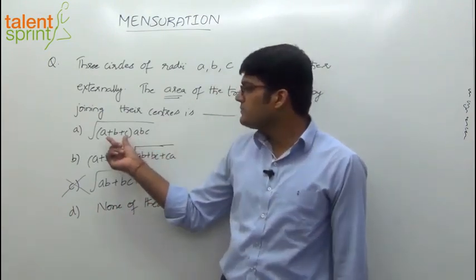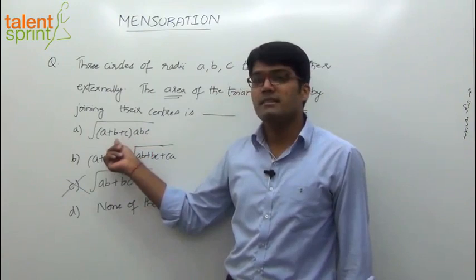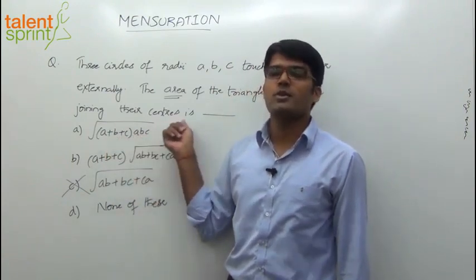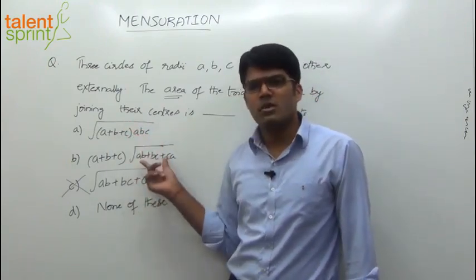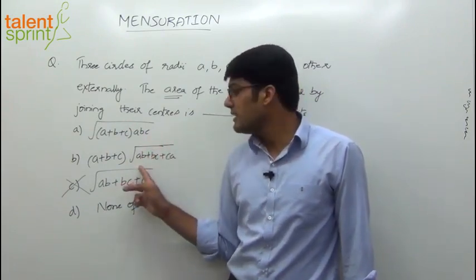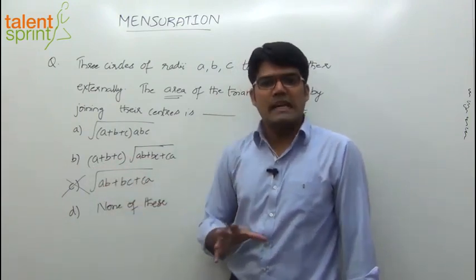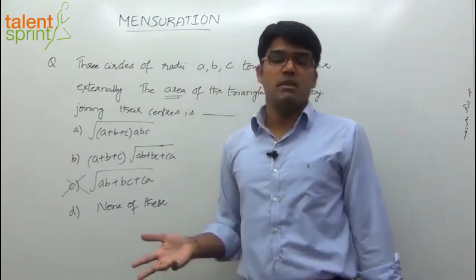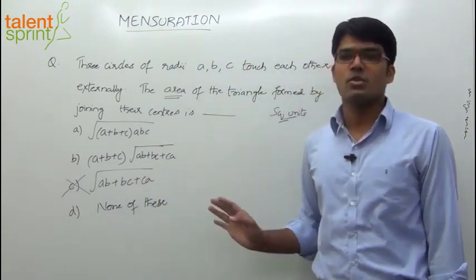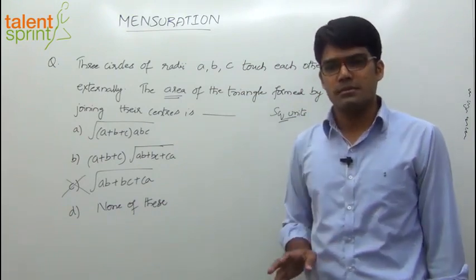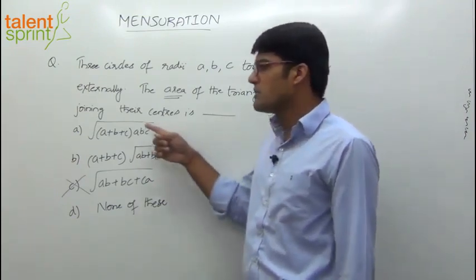Look at the remaining options. One option has length times length times length — length cubed — times another length (A plus B plus C), giving length to the power 4. Square root of length to the power 4 is length squared — square units. That's possible. The other option also works out to length squared under a root times another length, also giving square units. So options A and B are in square units, while option C is not.